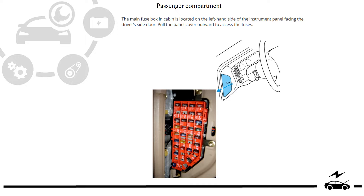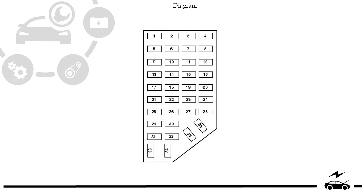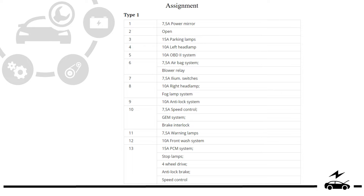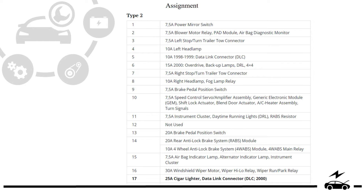Passenger compartment fuse box. Location. Diagram. Assignment Type 1. Assignment Type 2.